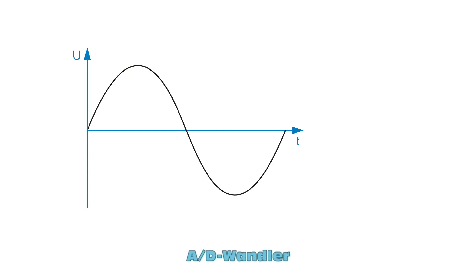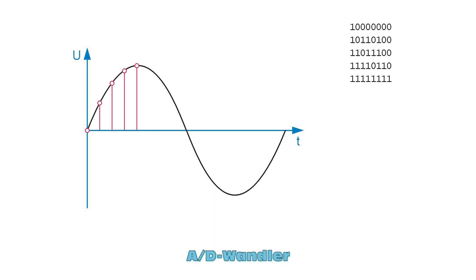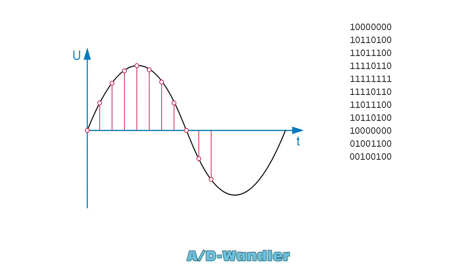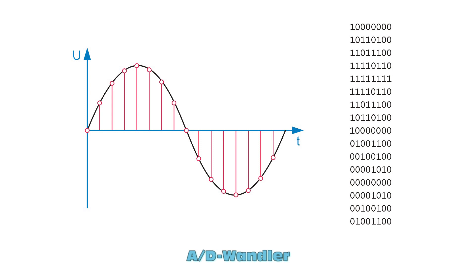The conversion of our signals occurs in an analog-to-digital converter. This samples the original curve at equal intervals and turns the measured voltage into a number. However, not into a normal decimal number, but into a binary number, which only knows two different digits: 0 and 1. We don't transmit the actual signal, but only a sequence of numbers.